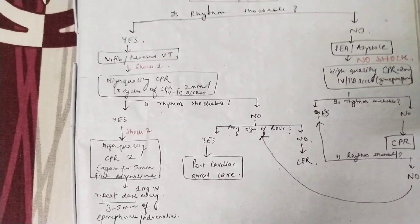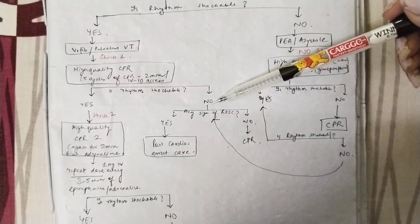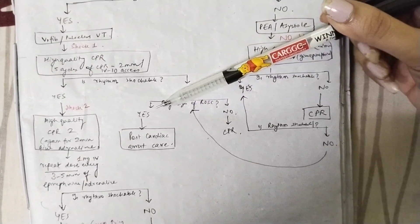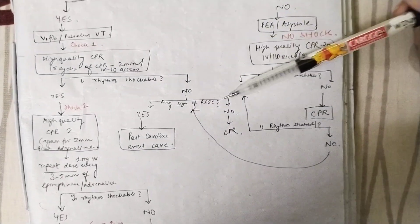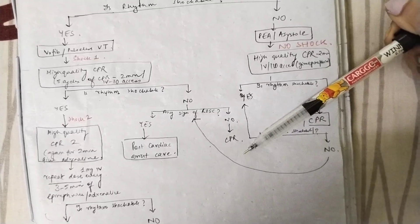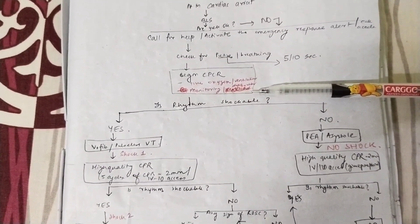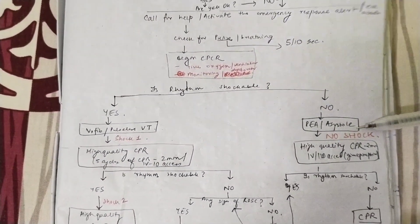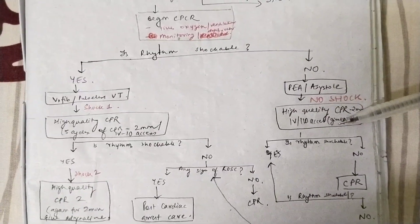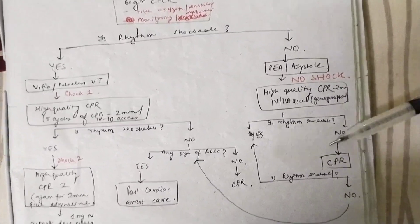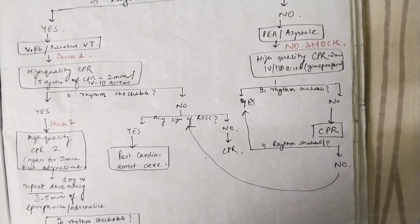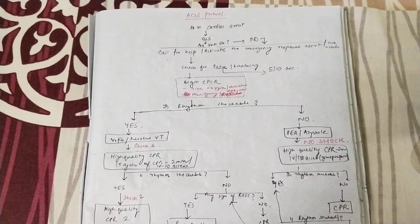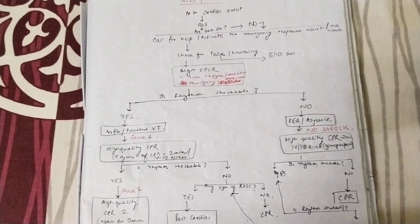If the rhythm is non-shockable, there is no role for shock — just give CPCR and start IV access. Keep checking: if there is any sign of return of spontaneous circulation (ROSC), the CPCR has been successful and you move to post-CPCR care. If no sign of spontaneous circulation, continue CPCR. This is the overall ACLS protocol; next I will also discuss monitoring in anesthesia as it is somewhat related.